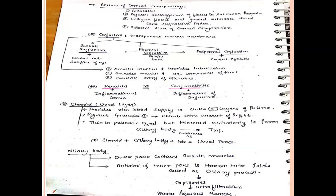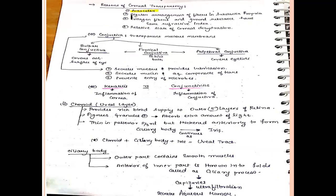The reasons for corneal transparency are: the cornea is avascular; the type 1 collagen fibers are in regular arrangement; the collagen fibers and the ground substance have the same refractive index; and the relative state of corneal dehydration.